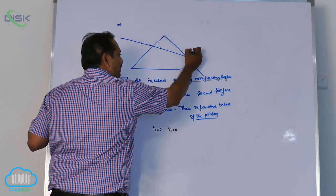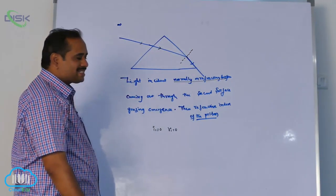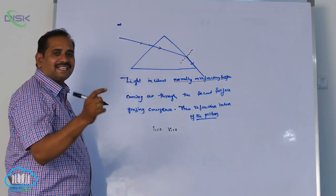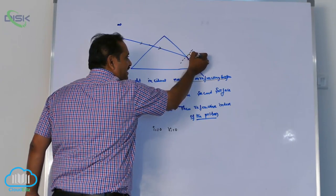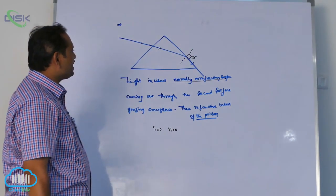Come to the second surface. Come to the second surface. Grazes at the second surface. All of you understand I think so. Grazing means 90 degrees. Grazing means 90 degrees.